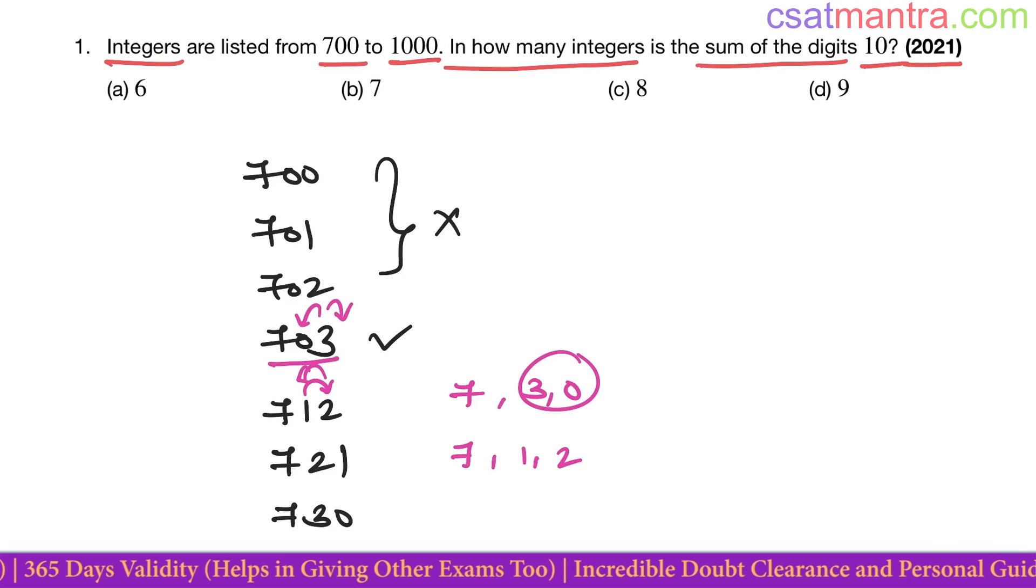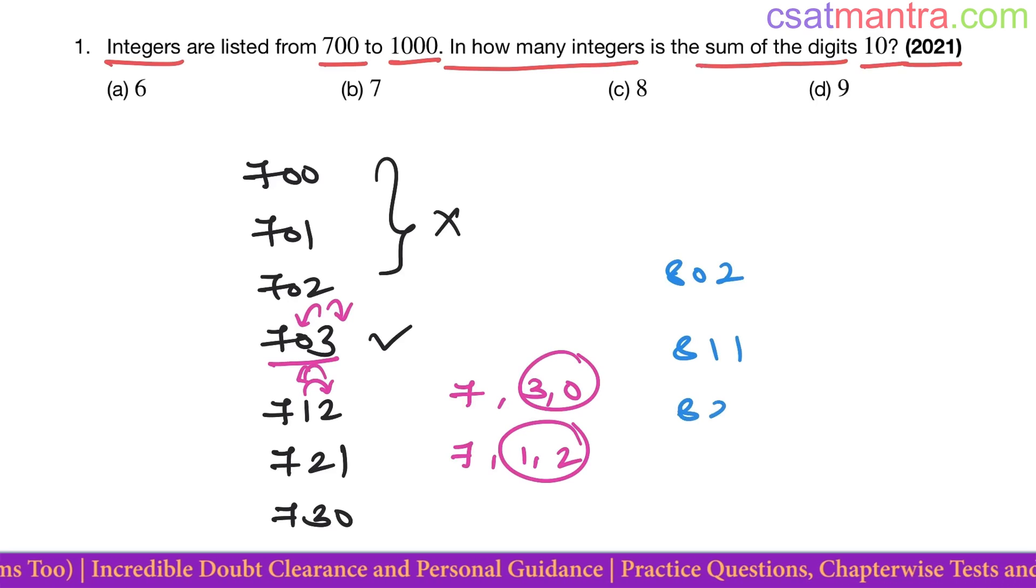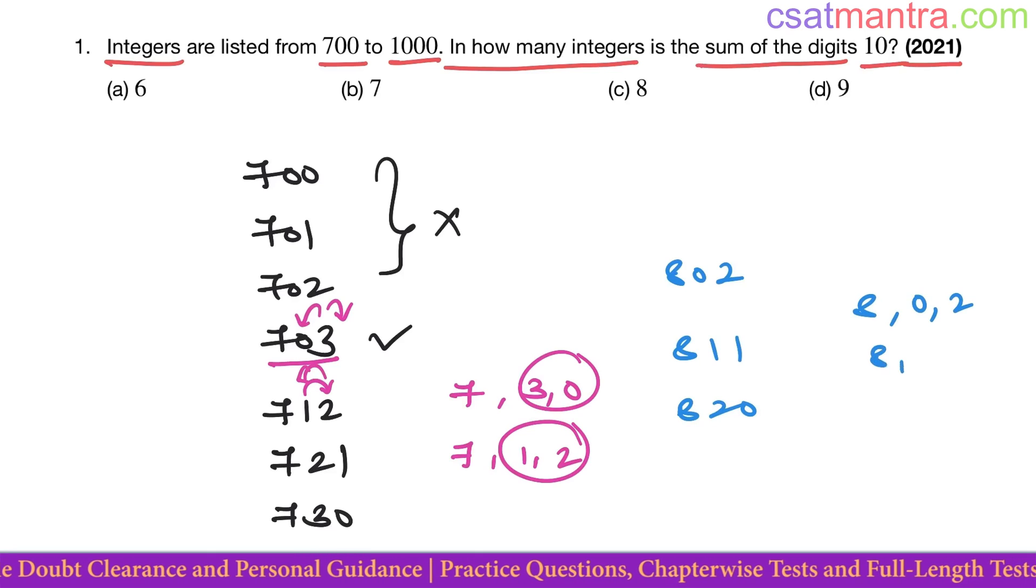Now 802, 811, 820. 802, 811, to have 10 when you shuffle the number looks same. Here 11, okay, when you shuffle, you would be having two possibilities.